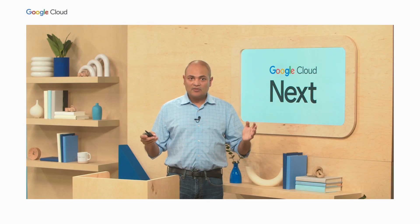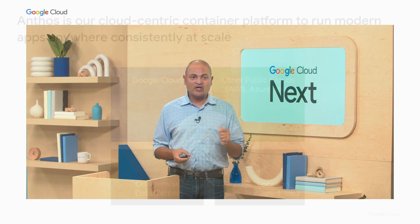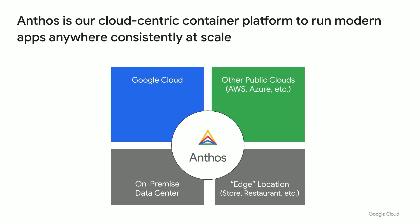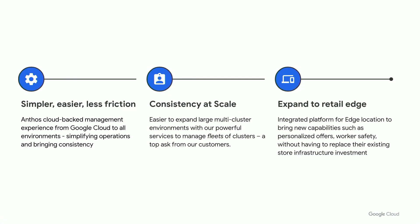To recap: Anthos is our cloud-centric container platform to run modern apps anywhere consistently at scale — on Google Cloud, on other public clouds, on premises in data centers, and on your edge. We are delivering three key innovations: number one, we've made it simpler and easier; number two, we are delivering consistency at scale, think hundreds or thousands of clusters; and Anthos now expands to retail edge. Thank you so much for your time. I'm super excited with all the innovations we have and excited to help you innovate and deliver new capabilities to your customers.